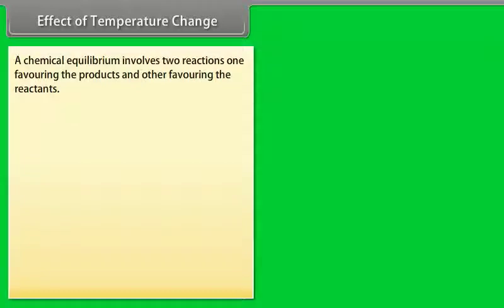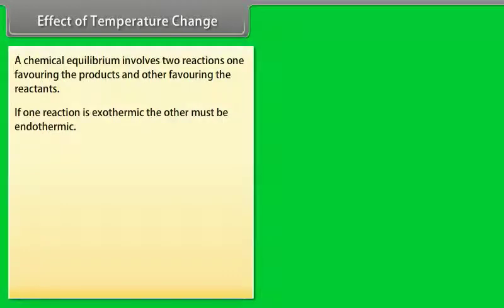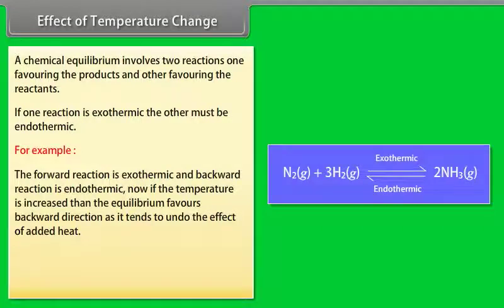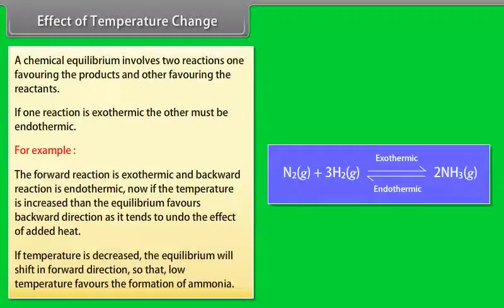Effect of temperature change: A chemical equilibrium involves two reactions — one exothermic and one endothermic. For example, if the forward reaction is exothermic and the backward reaction is endothermic, increasing temperature shifts equilibrium in the backward direction, as it tends to undo the effect of added heat. Decreasing temperature shifts equilibrium in the forward direction. Therefore, low temperature favours the formation of ammonia.